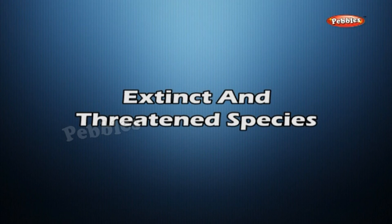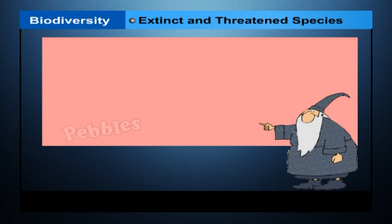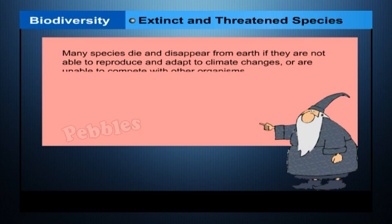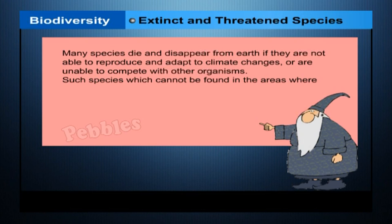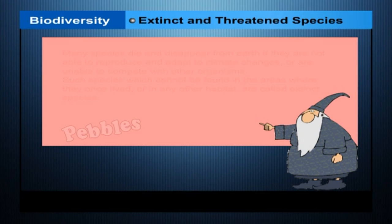Many species die and disappear from the earth if they are not able to reproduce and adapt to climate changes, or are unable to compete with other organisms. Such species, which cannot be found in the areas where they once lived or in any other habitat, are called extinct species.